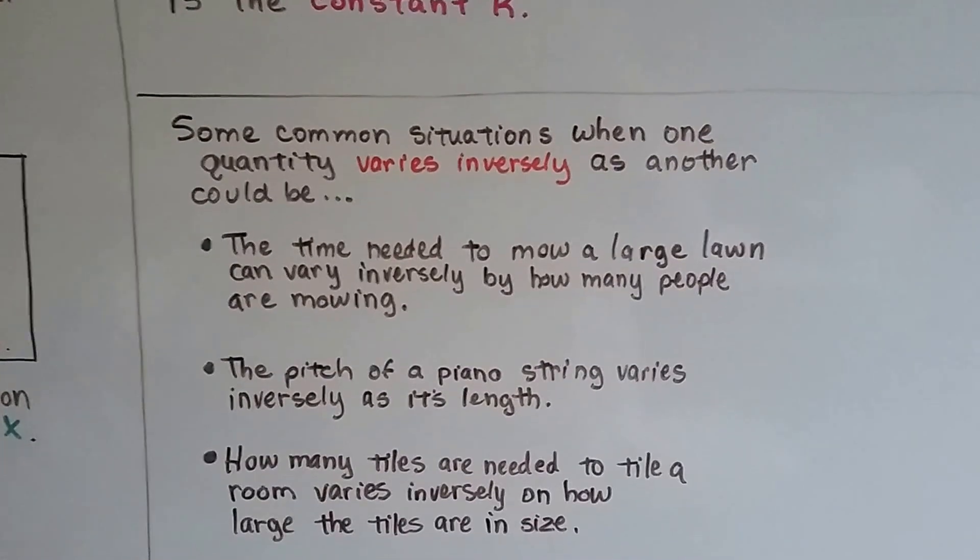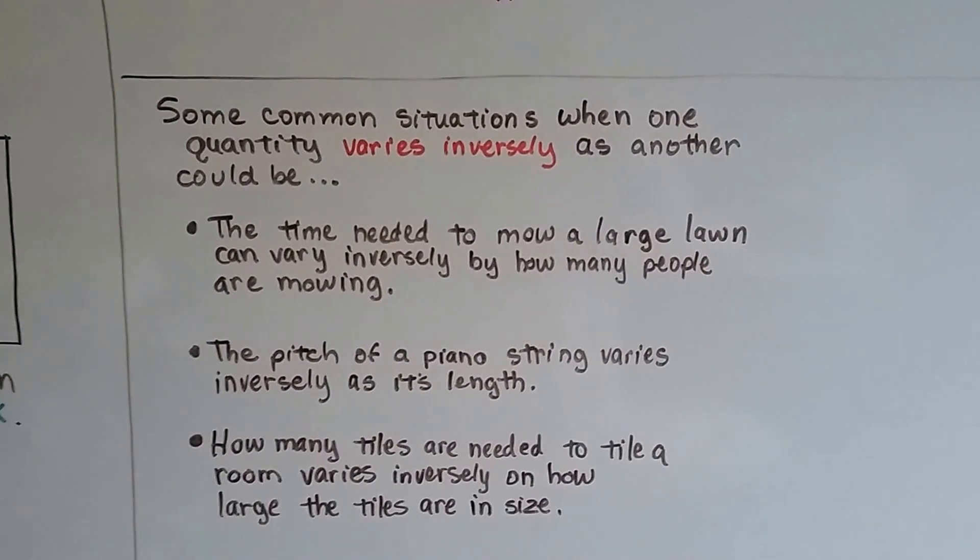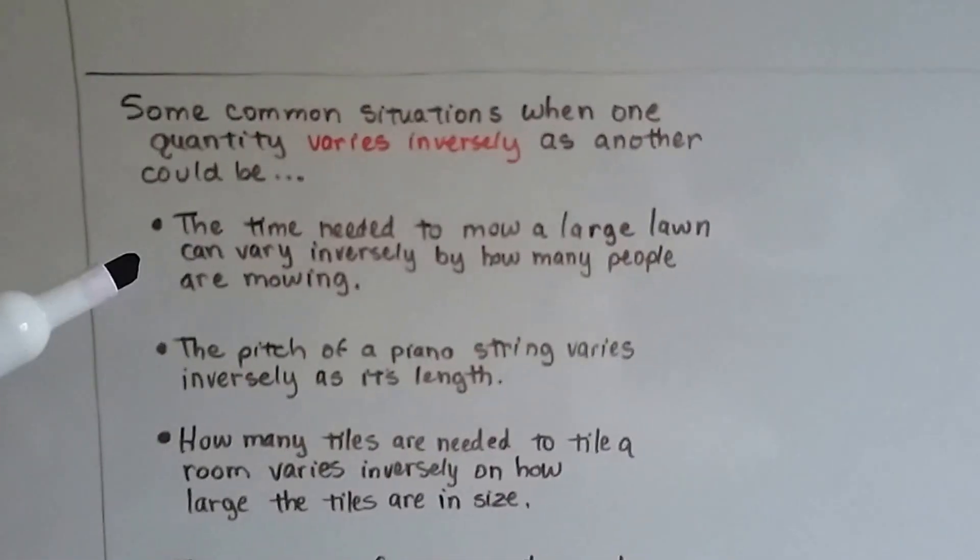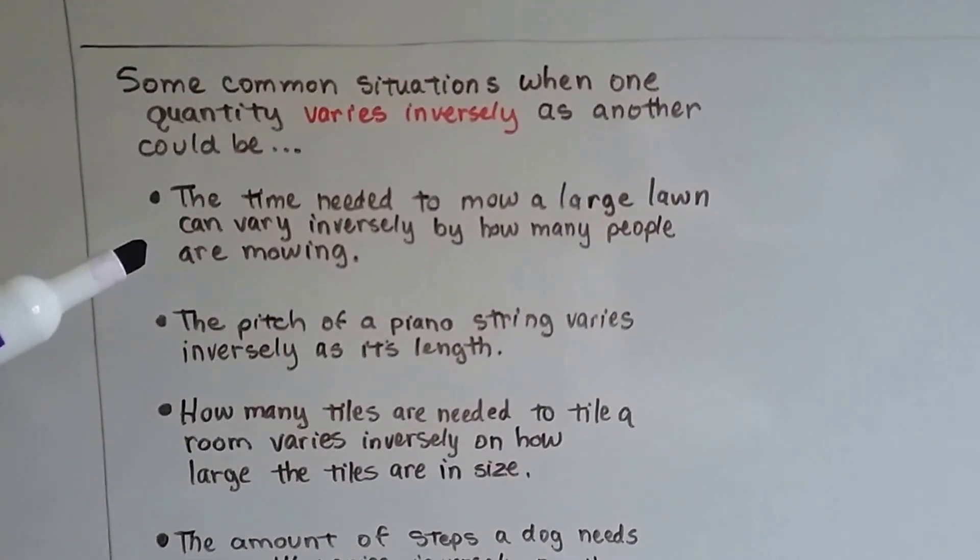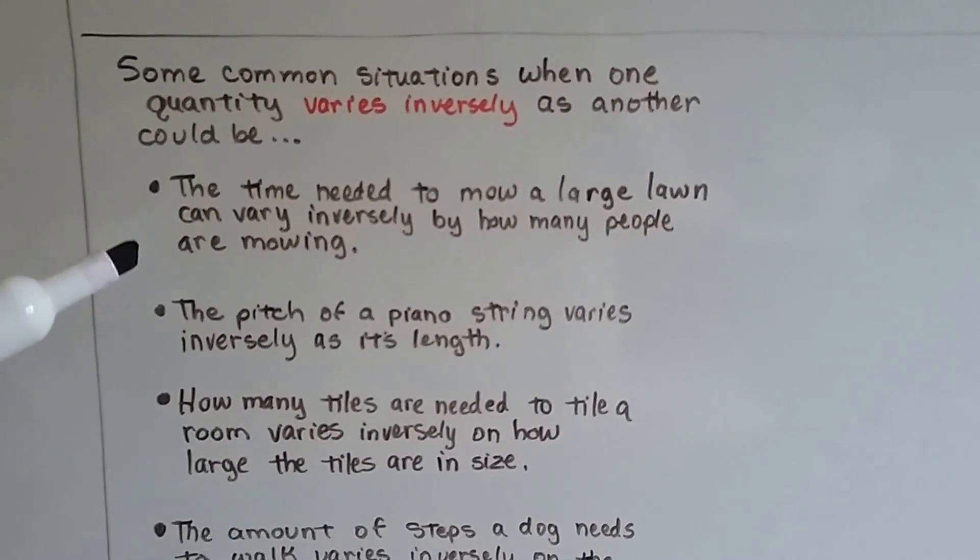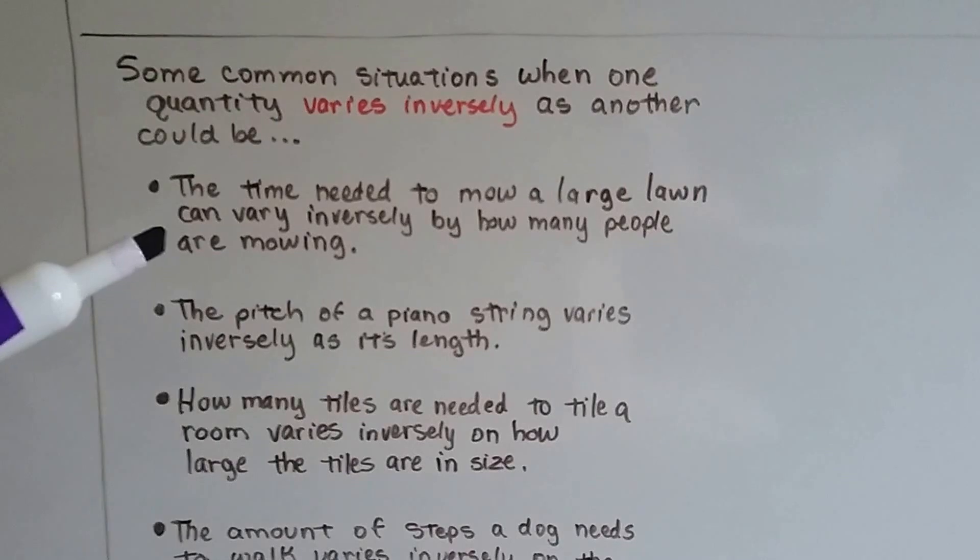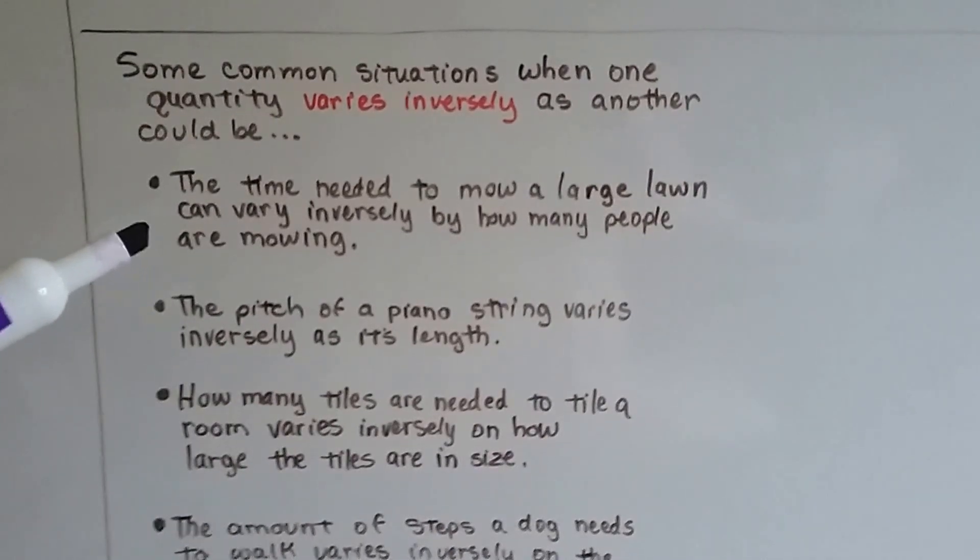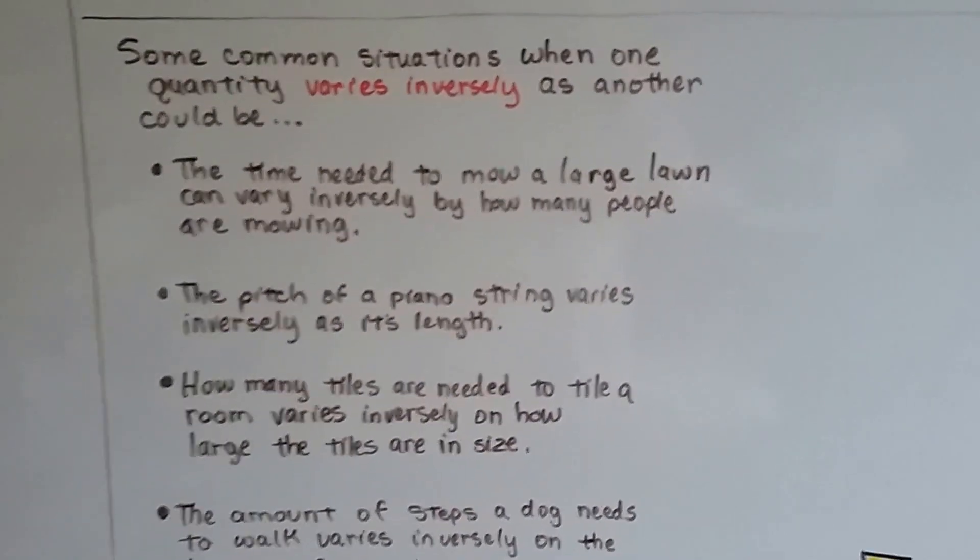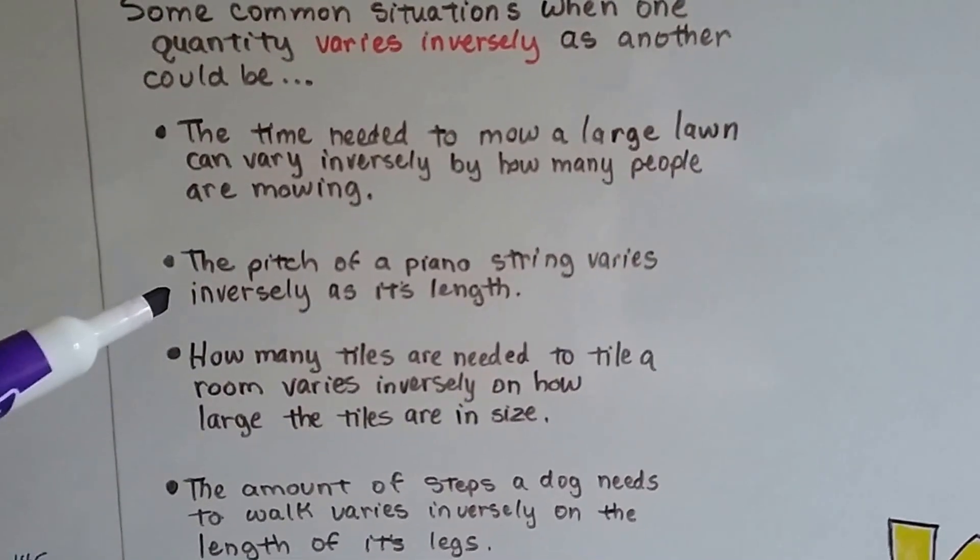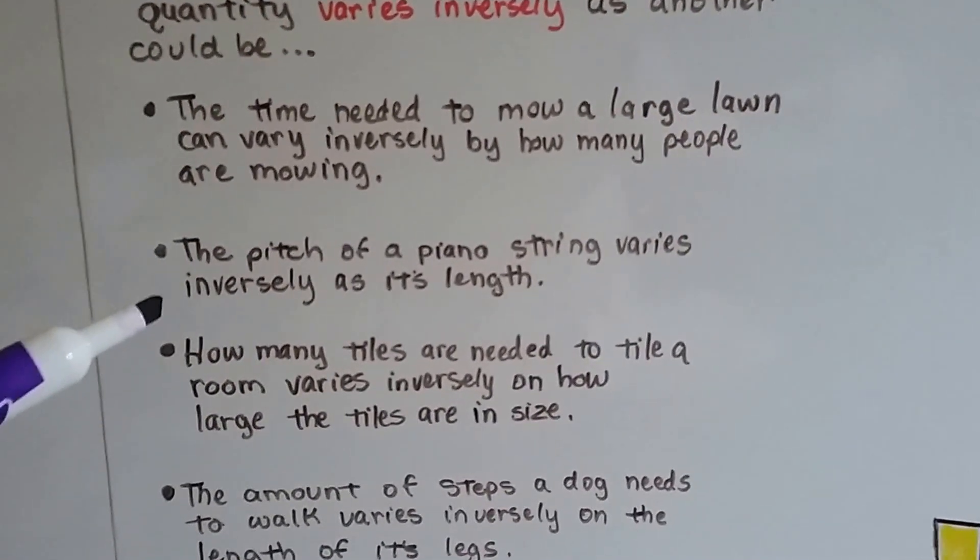There's some common situations when one quantity varies inversely as another. It could be like the time needed to mow a really large lawn can vary inversely by how many people are mowing. So if you've got a really large lawn to mow, it could take you a couple hours. But if you've got a few friends helping you, you're going to get it done quicker.